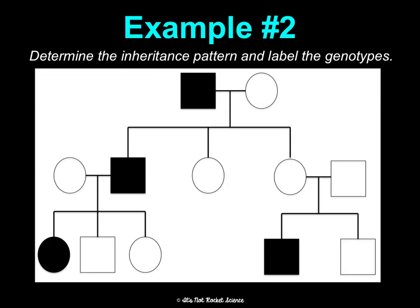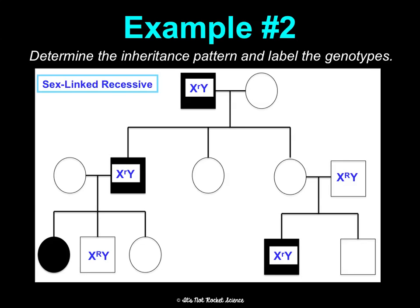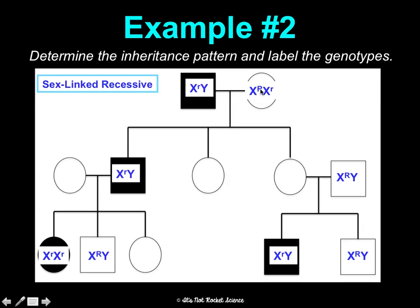Looking at the second pedigree, we see three squares to one circle — most likely sex-linked recessive. I start labeling the squares first because they're easiest: shaded males have the recessive X, unshaded males have the dominant allele. The one shaded female must have gotten two recessive X's. Going through each female, the grandmother is heterozygous because her son has the disorder and he must have gotten it from her — remember, he gets his Y from dad. Another female is also heterozygous because her daughter has the disorder and must have gotten it from both parents. Remaining females are heterozygous because that's all their fathers can give them.